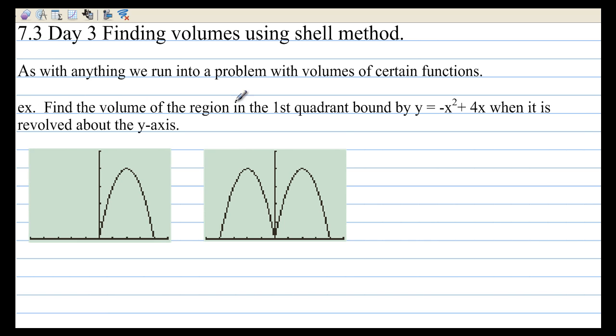For example, find the volume of the region in the first quadrant bound by y equals negative x squared plus 4x when it is revolved about the y-axis. So here is the curve negative x squared plus 4x. We have zeros of 0 and of 4. And of course, this is an upside-down parabola. A is negative.